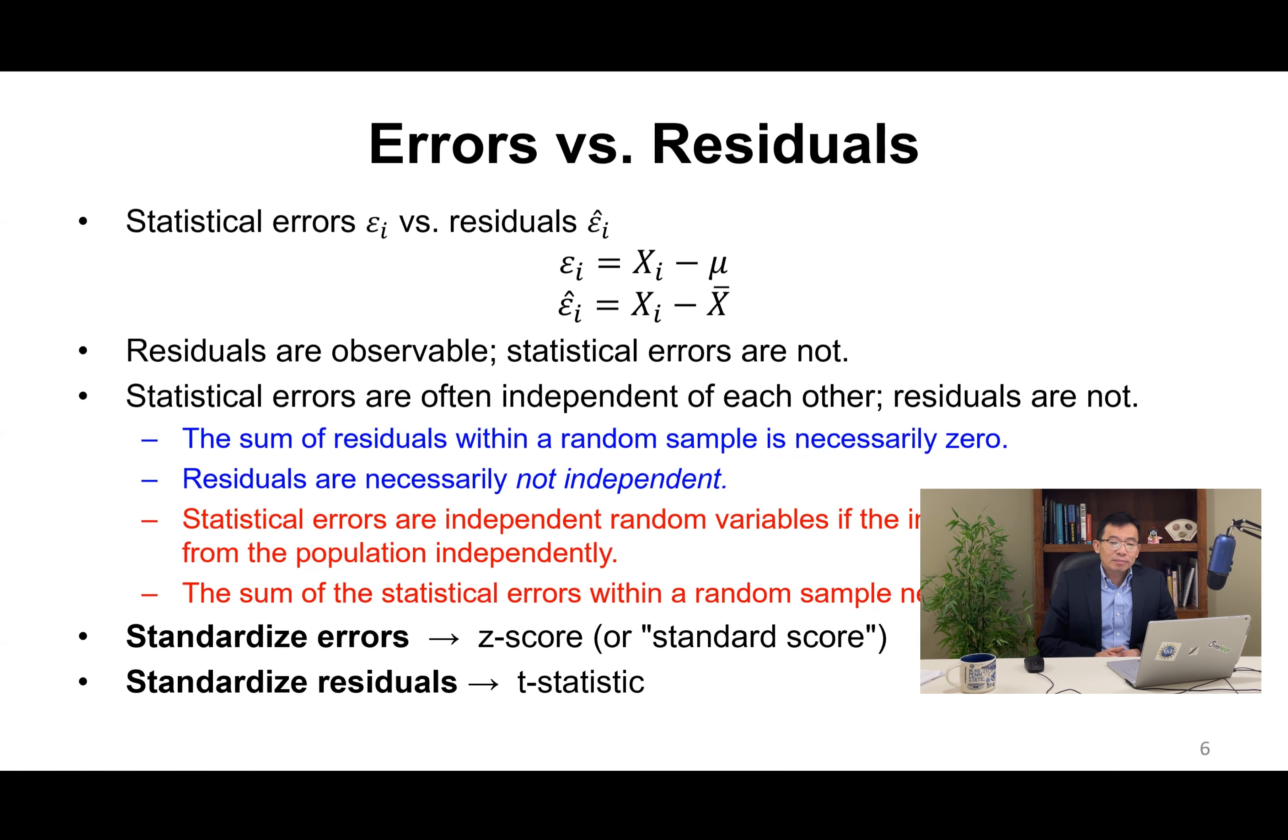Statistical errors are often independent of each other, but residuals are not. The sum of the residuals within a random sample is necessarily zero, because if we have x1 minus x bar, x2 minus x bar to xn minus x bar, this equals epsilon 1 hat, epsilon 2 hat to epsilon n hat. If we add all this together, it equals x1 plus x2 to xn minus n x bar. But the summation x1 to xn equals n x bar, so n x bar minus n x bar equals zero. That is why the sum of the residuals within a random sample is zero.